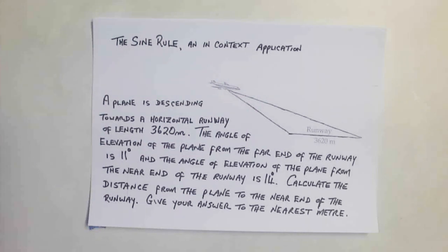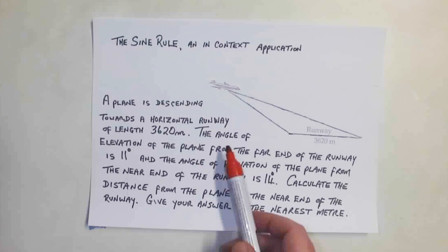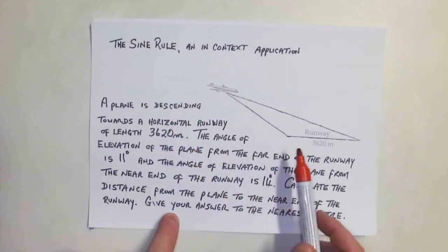In this clip, we're going to look at the sine rule as an in-context application. Here we've got a plane descending towards a horizontal runway. The horizontal just means zero degrees.